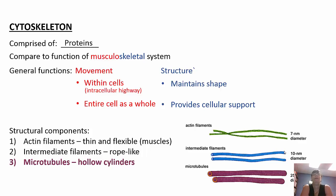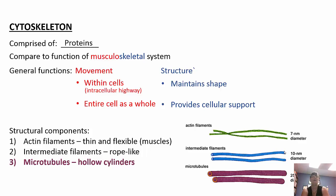The cytoskeleton is comprised of proteins and can be compared to the musculoskeletal system — it functions in movement and structure. Microfilaments (actin filaments) are thin and flexible and function in muscle contraction. Intermediate filaments are rope-like and function in structural support. Microtubules are hollow cylinders that make up cilia, flagella, and centrioles, and also serve as highways within cells — motor proteins walk along microtubules to transport materials.